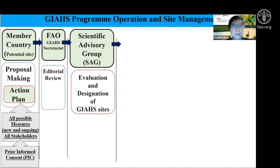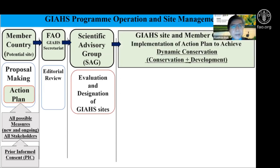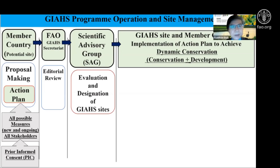After a proposal is successfully adopted and endorsed as a GIS site, management responsibility returns to the original proposing countries and GIS stakeholders of rural areas. FAO recommends conducting dynamic conservation — a concept combining conservation with dynamic activities such as development and adaptation of the site to contemporary situations.